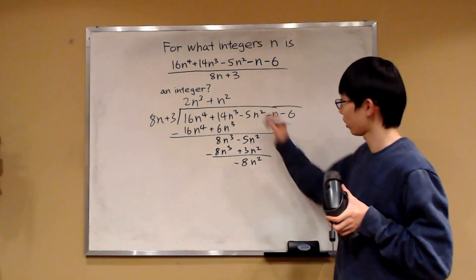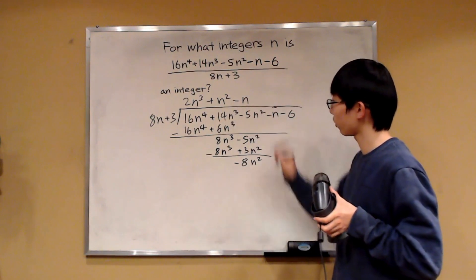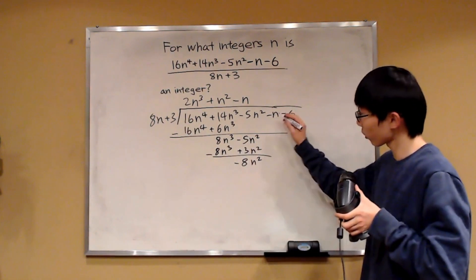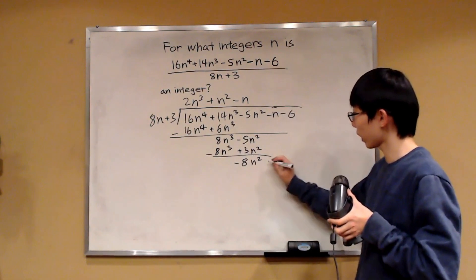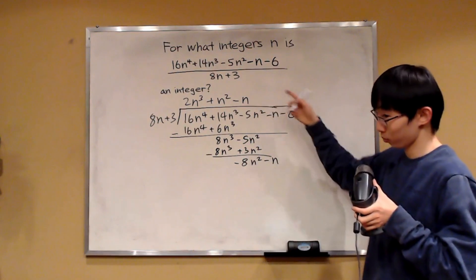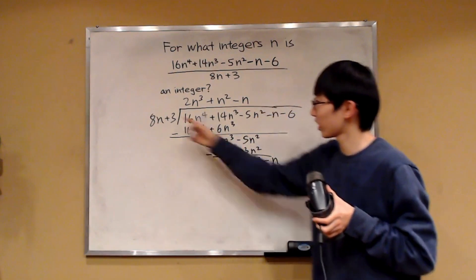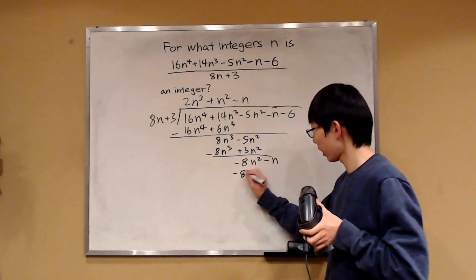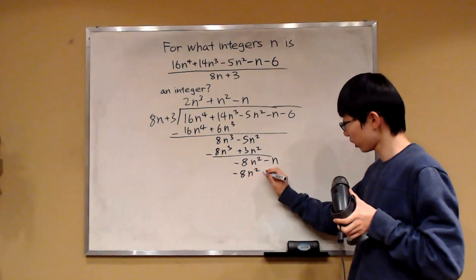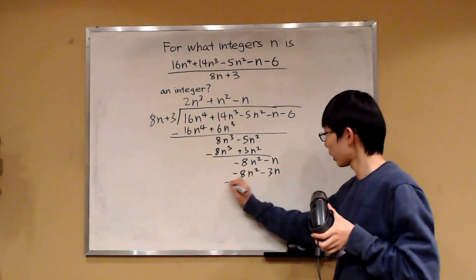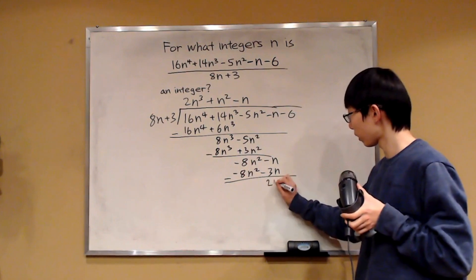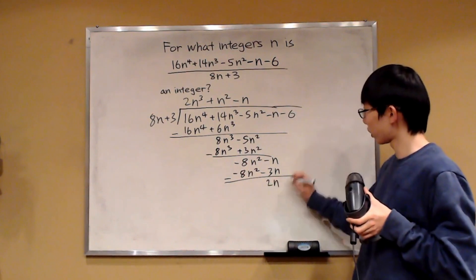We repeat again. Over here we can take our next term as minus n. We can also drop this negative n down here. Now, negative n times 8n would be negative 8n squared, and then negative n times 3 is minus 3n. And then we subtract, so negative 1 minus negative 3 gives us 2n. And then we drop this negative 6.